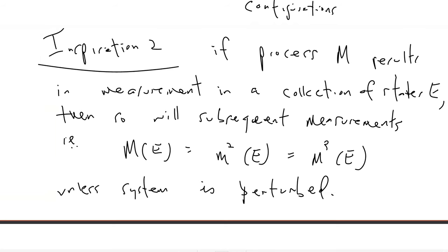One tantalizing aspect of thermodynamics: the only agency we have is really over thermodynamic processes. If a human has agency, it seems the only thing we can do is say yes or no to a thermodynamic process — either open a valve or close a valve — and then the rest is just letting nature spring into position.